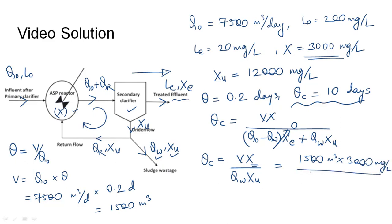Substituting the value of V here as 1500 meter cube into X that is given here as 3000, divided by Qw, the underflow that needs to be found, times Xu that is 12,000. This would be Qw equals 1500 divided by 4 into theta_c is nothing but 10 days times 10. This would give theta_c as 10 days here, and substituting this would give Qw as 37.5 meter cube per day.